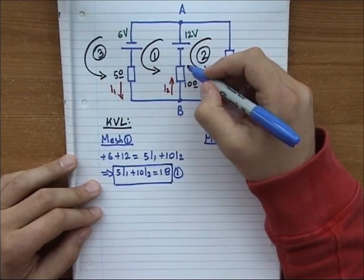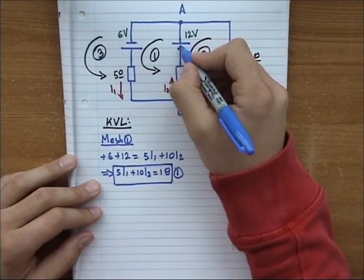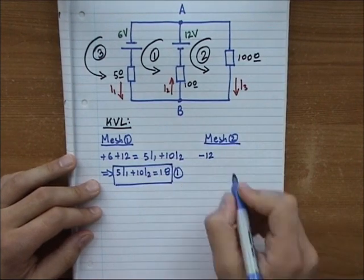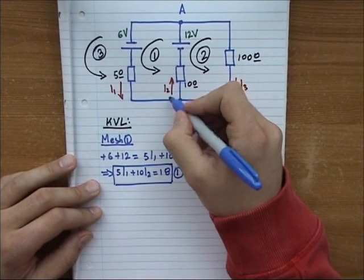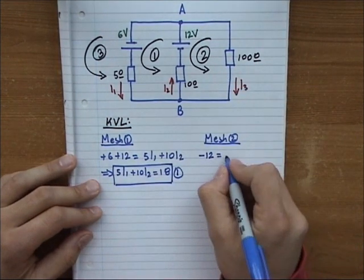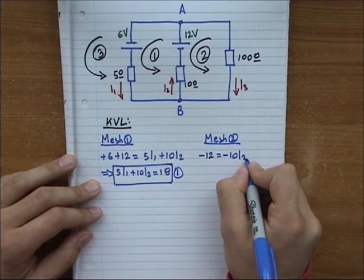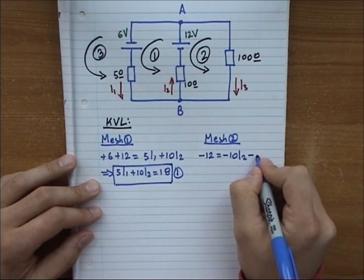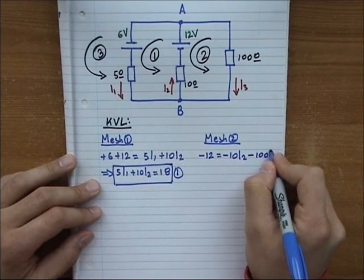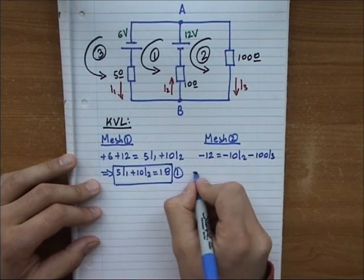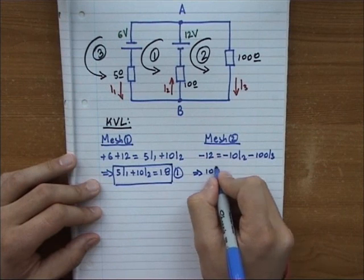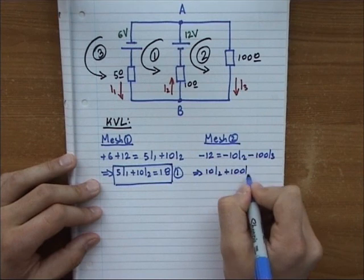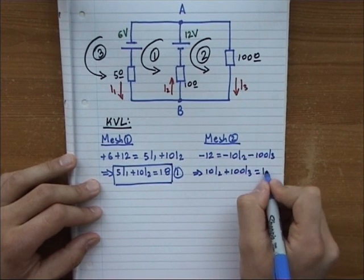Now for mesh two. Moving counterclockwise again, I find the positive terminal of the battery so I have negative 12. This is equal to negative 10I2, since I'm running against I2, and negative 100I3, since I'm running against I3. Tidying up: equation two is 10I2 + 100I3 = 12.